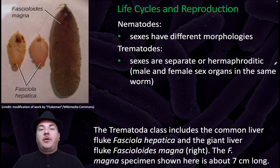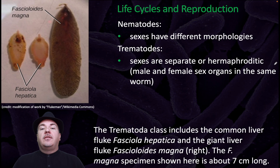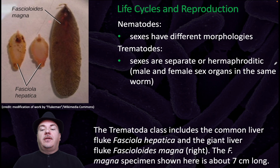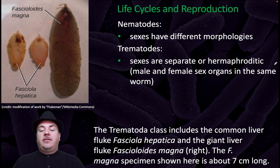Among the flatworms, we have the trematodes, which are the flukes. The sexes are separate, or they can be hermaphroditic, which means male and female sex organs are in the same worm. Here are a couple of examples: the common liver fluke and the giant liver fluke.